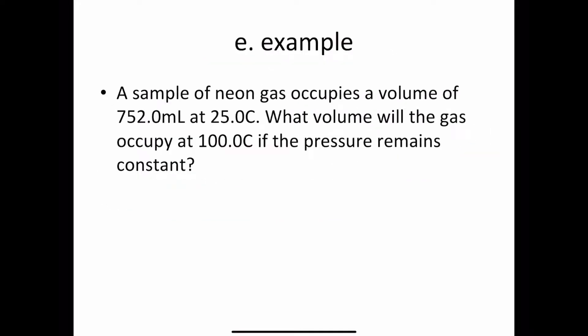So here's an example. A sample of neon gas occupies a volume of 752 milliliters at 25 degrees Celsius. What volume will the gas occupy at 100 degrees Celsius if the pressure remains constant? So remember how I taught you that equation?